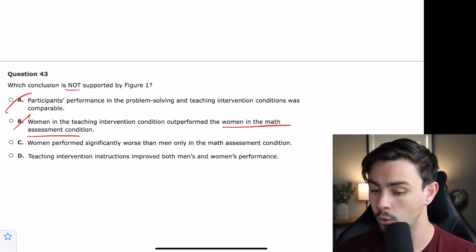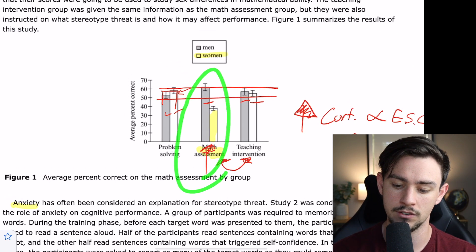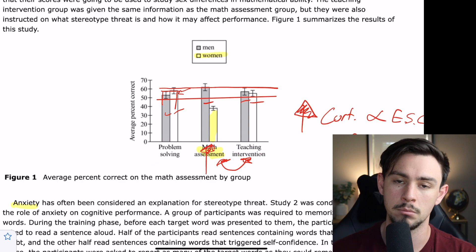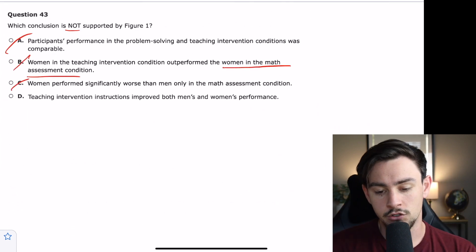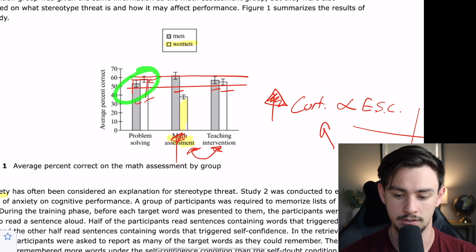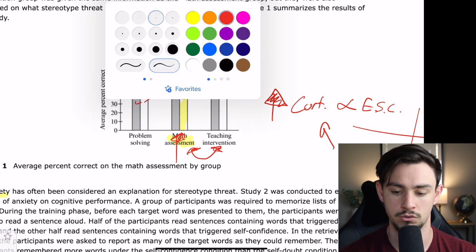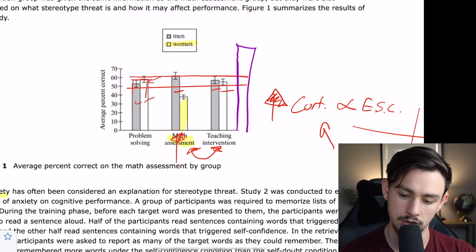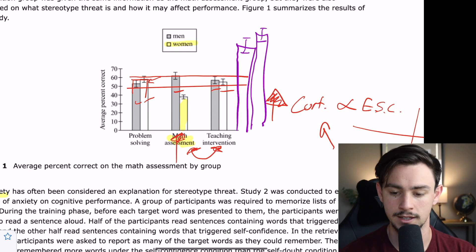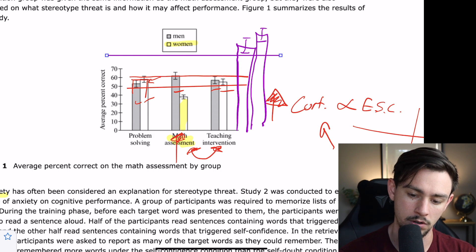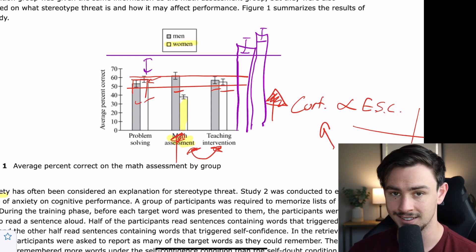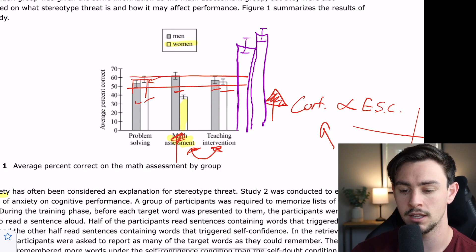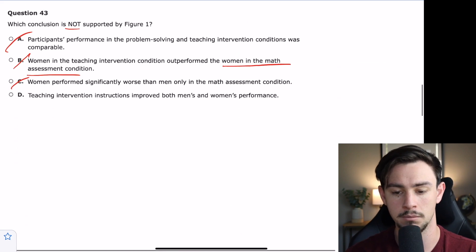C says, women performed slightly worse than men only in the math assessment condition. That's correct. This, right here, this math assessment condition was the only one that dropped, whereas the women and the men performed exactly the same with invariance in the other two groups. So, I can roll out C. Then D says, teaching intervention instructions improved both men's and women's performance. No, that didn't happen, right? Because this and this are essentially the same number. What we would have to see for that to be true, I'm going to do purple because sure, is if we looked and we saw something like this. If we saw something like this, we can see that these error bars are above the top error bars in any of the other groups. And so, there's no overlap. This is not due to pure variance. This is actually statistically significant. But we don't see that. We see that their error bars overlap just like the ones in adjacent groups. So, that is a false statement. The correct answer is D.